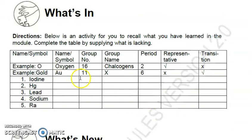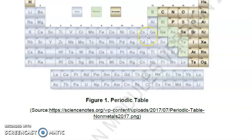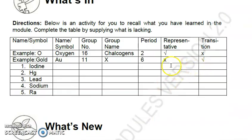Let's start answering your activity now. For example, iodine. In this column you're going to write the symbol if the name is given, and you're going to write the name if the symbol is given. For iodine, the symbol is I, and the group number is 17. Then the group name is halogen or halogens. The period is five. Is iodine a representative element or a transition element? As you can see, iodine is in here, so iodine belongs to the representative element because transition elements are in between the representatives. We're going to check here the representative and put X mark here in the transition.